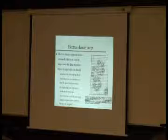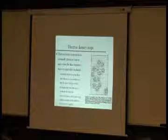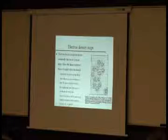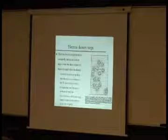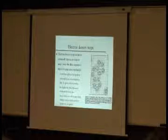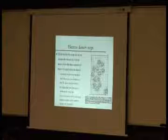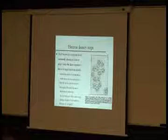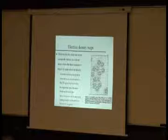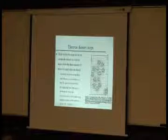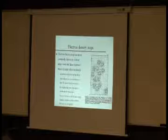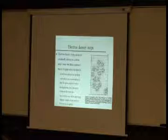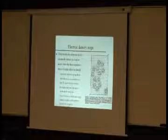Electron density maps are usually drawn as contours of equal electron density, similar to geological altitude maps, except the altitudes are electron density values. The more contour lines nested within each other, the higher the electron density at that point. You can take slices in three-dimensional space to look at any plane in the unit cell. The higher the peak, the heavier the atom — because heavier atoms have more electrons.